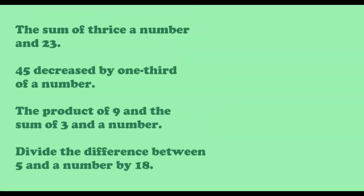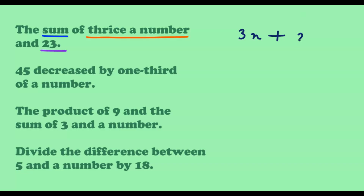Now let us look at a few more complicated problems. We have 'the sum of thrice a number and 23.' We have the word sum, so we use addition. Thrice a number means 3 times a number — using n, that is 3n. Adding 23 gives us 3n plus 23.